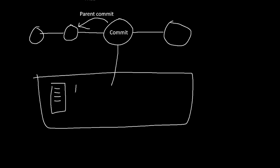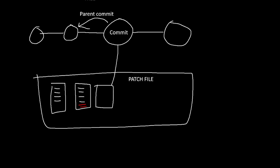A commit is a snapshot of all of the text files at a certain point — or you can consider it to be that. Under the hood, a commit is not actually a snapshot of all the files at a certain point. What a commit actually is, is something called a patch file. A patch file is a file that describes the changes in a file since the last commit.